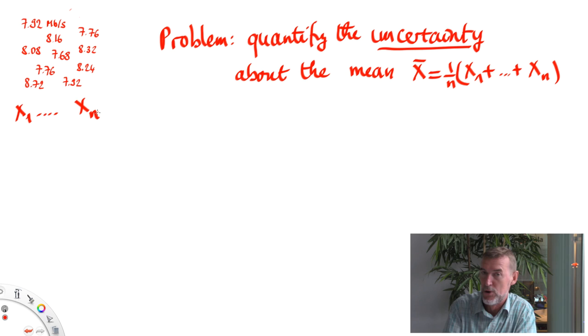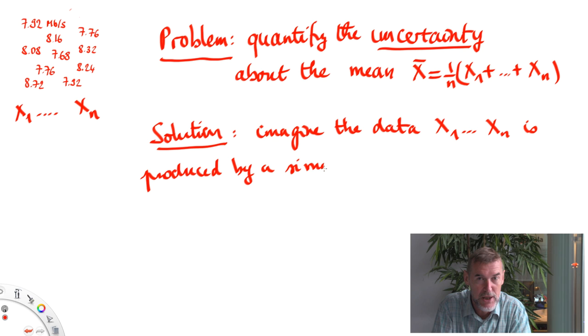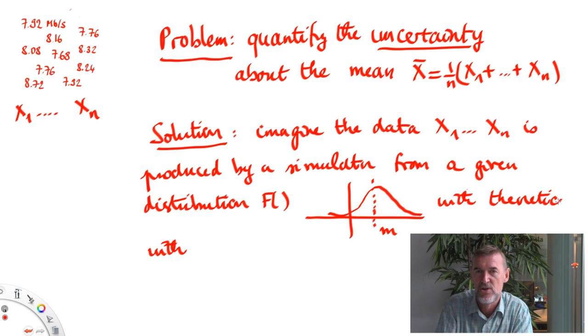So statisticians have invented methods for that. They imagine that the data we have has been produced by a simulator. It's not nature but a simulator that produced it. And we want to say something about the simulator. In this case we imagine the simulator is simply sampling the data from a theoretical distribution. There is a probability distribution that I call f and this probability distribution has some theoretical mean. For example, if it's a Gaussian distribution, the mean is its central value. But we don't necessarily assume it's Gaussian, we just assume it's some distribution.